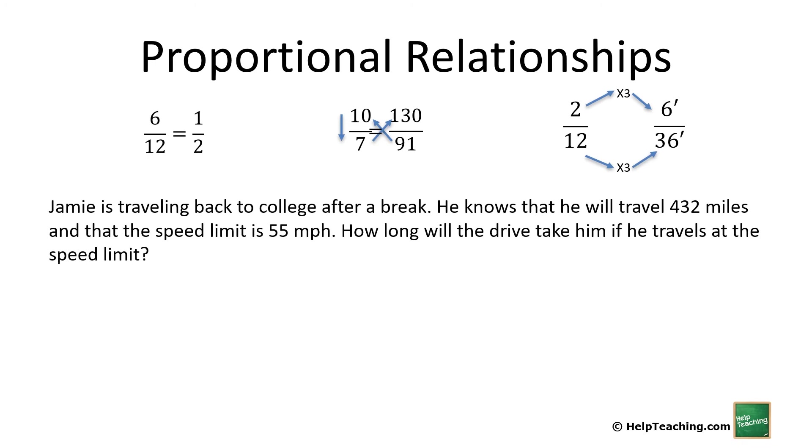Let's look at an example. Jamie is traveling back to college after a break. He knows he will travel 432 miles and the speed limit is 55 miles per hour. How long will the drive take if he travels at the speed limit? So we know a rate here, miles per hour. This means he's traveling 55 miles in one hour. He is going to be traveling a total of 432 miles. What's important is that we keep our units on either the top or the bottom the same. Our miles are on the top, hours are on the bottom. Since what we don't know is hours, we will start with 432 times 1 divided by 55 and we get 7.85 hours.